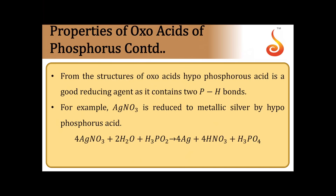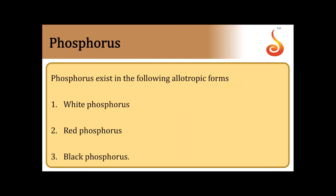From these structures we can see that hypophosphorous acid has two P-H groups, making it a very good reducing agent. For example, metal nitrates such as AgNO3 are very easily reduced to the corresponding metal using hypophosphorous acid. The hydrogens bonded directly to phosphorus are responsible for this reducing property.